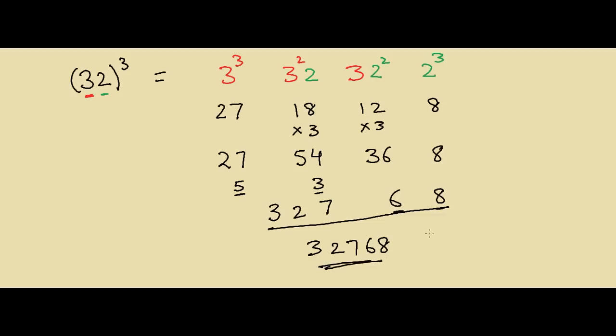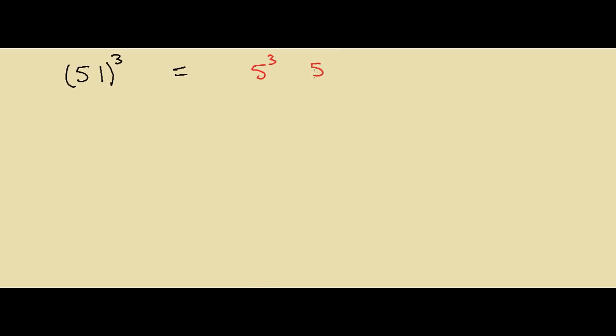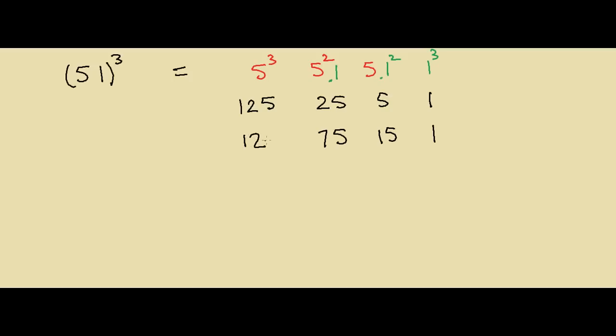Let's try another number — suppose I have 51 and I have to take the cube of this. First I write 5 cube, 5 square, and 5, then 1 cube, 1 square, and 1. The calculations give 125, 25, 5, and 1. I multiply the middle terms by 3, so 25 times 3 is 75 and 5 times 3 is 15.